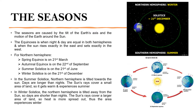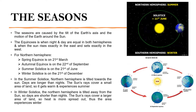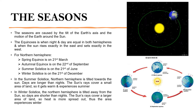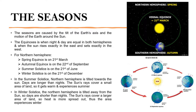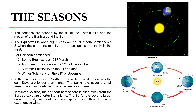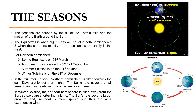In winter solstice in the Northern Hemisphere, it is tilted away from the Sun. So it spends lesser time in sunlight and has shorter days and longer nights. The Sun's rays cover a larger area of land, so the heat is more spread out and the area gets colder, so it experiences winter.